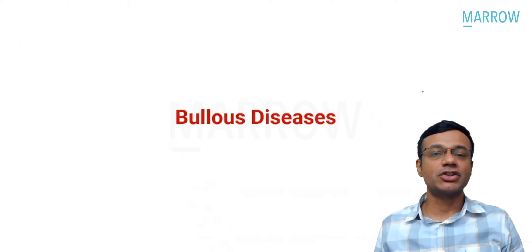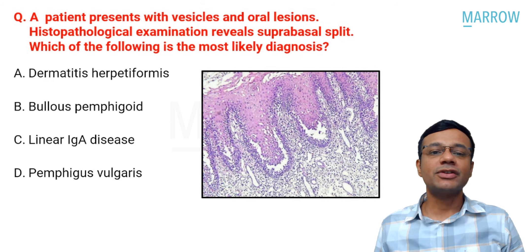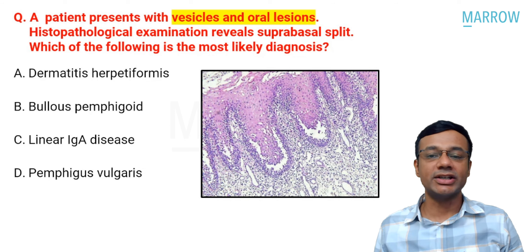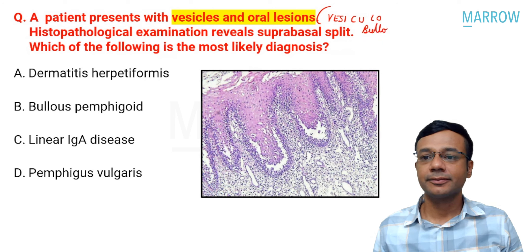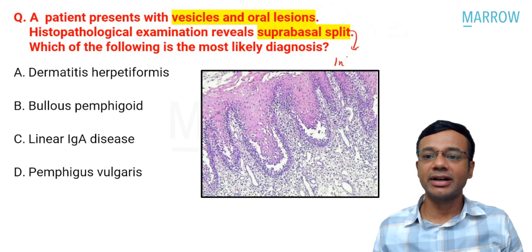Let's begin with the first topic of bullous disorders, question number one. A patient presented with vesicles and oral lesions, and histopathological examination reveals a suprabasal split. Which of the following is the most likely diagnosis? The key terms here are vesicles and oral lesions, meaning we are discussing a vesiculobullous disorder. The question tells us there is a suprabasal split, so this disorder has to be intraepidermal.